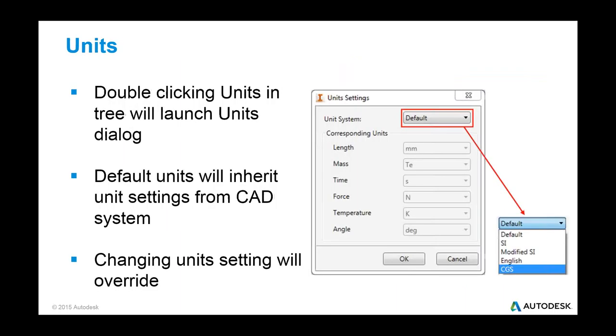So another thing that we've done is we've exposed the units. So we've always had the ability to do the units. It was kind of hidden in the analysis settings for in-CAD previously. But now it's directly on the tree. You can double-click it and edit it. And the important thing is we have a default unit set so that if you're just using the default settings, it's going to inherit the units that we have in the CAD system. But if you want to override that for simulation, you can just pick whatever unit system you want. And you'll do that. And if you switch back and forth between the units, it'll update the model for you.